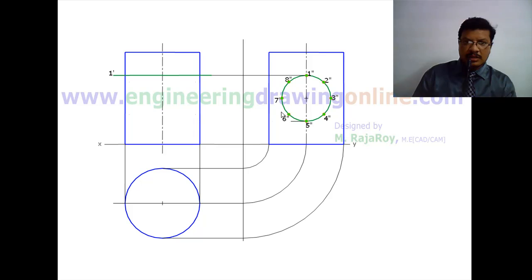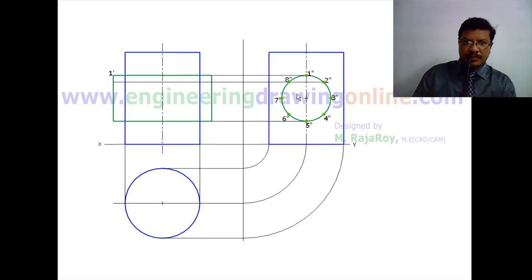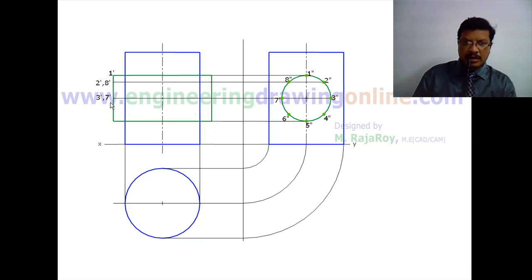Now this is 1 dash, 2 dash. When you are seeing from this direction, 2 is visible and 8 is invisible. So here you will get 2 dash, 8 dash. Similarly here you will get 3 dash, 7 dash. Here you will get 4 dash, 6 dash.